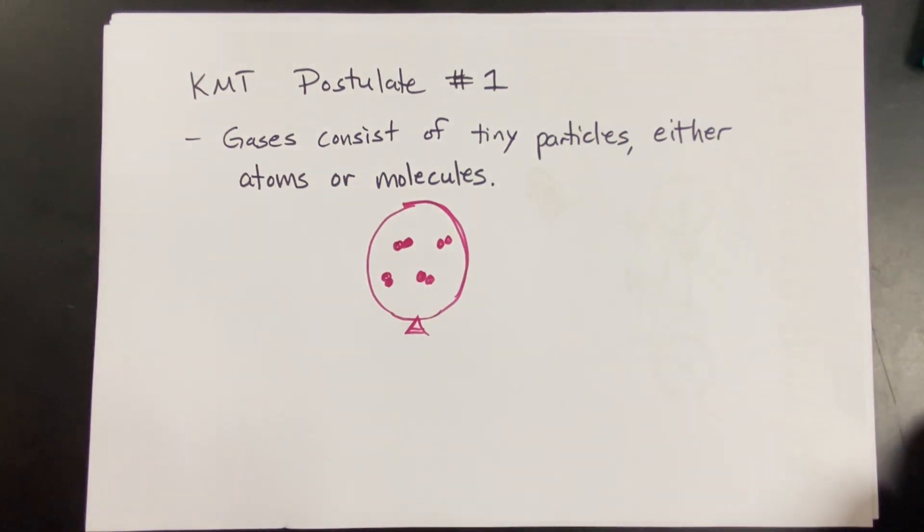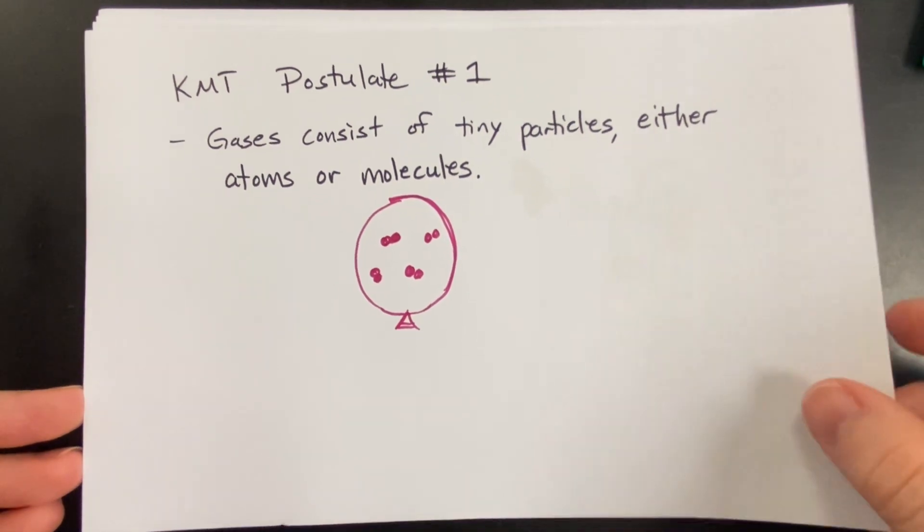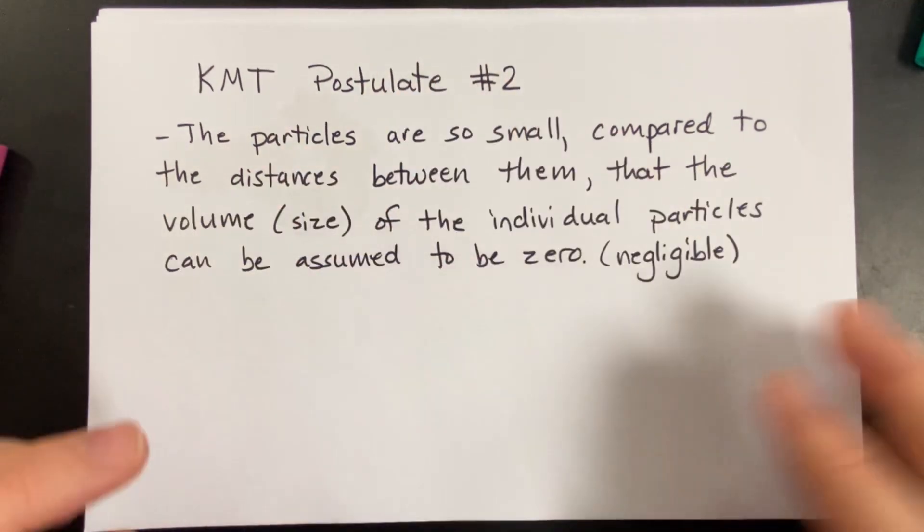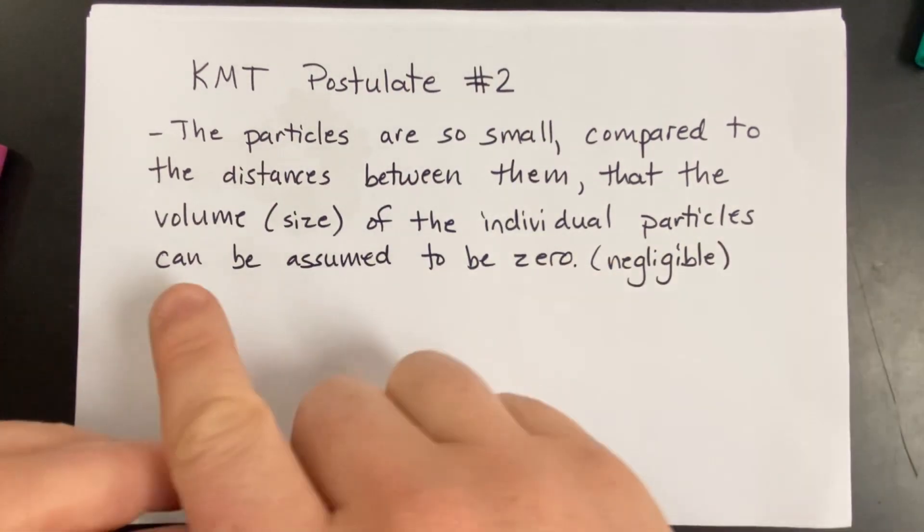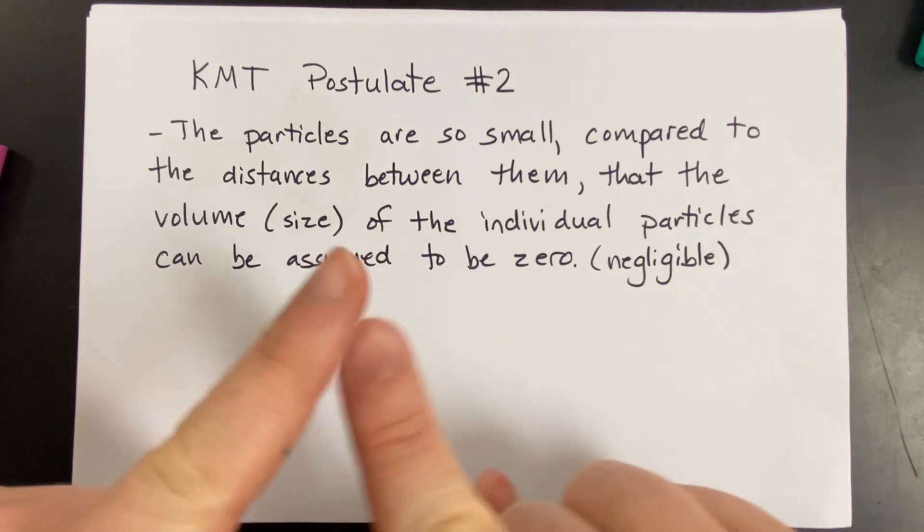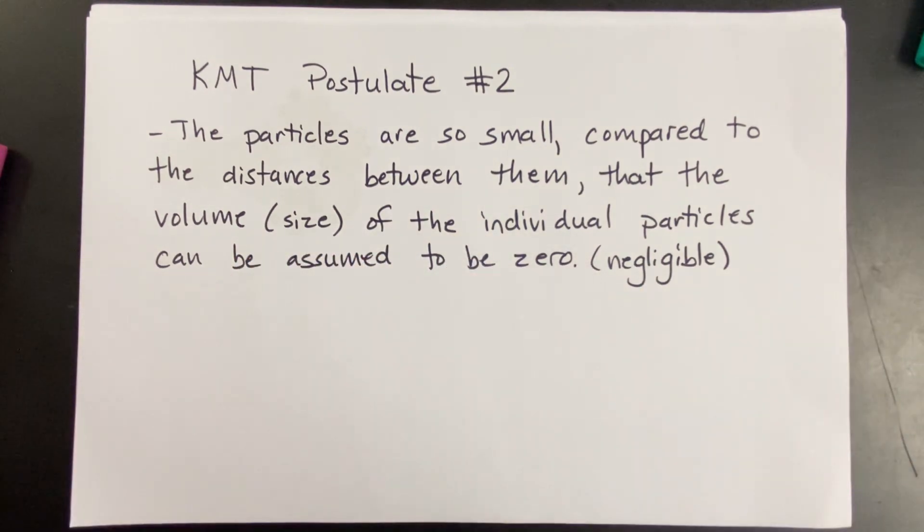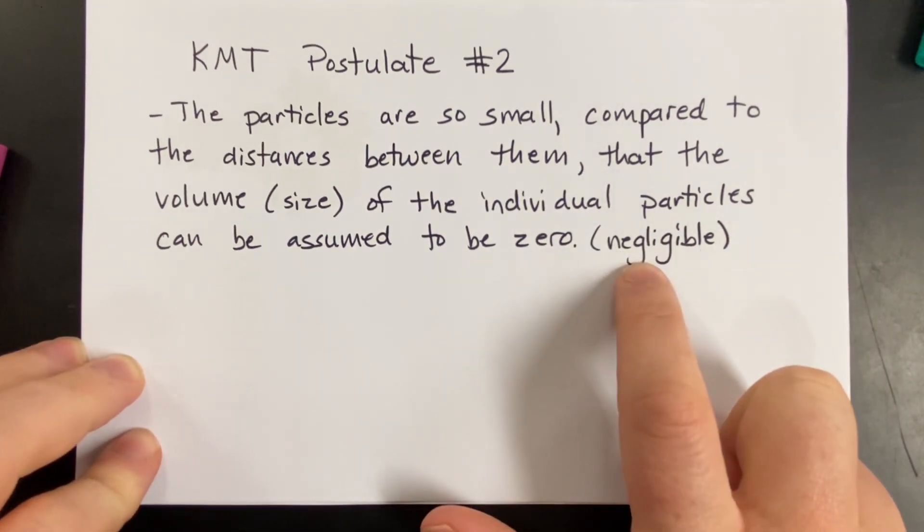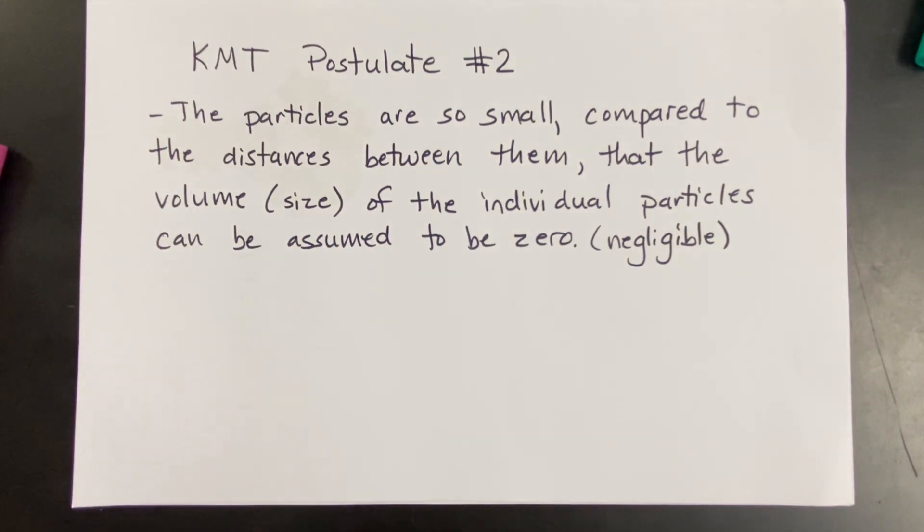I may not necessarily give you time to write down all of this. This is a video, so if you need more time to write this down in your notes, then definitely feel free to pause, okay? All right, postulate number two. Ah, this one's bigger. But the idea, we've actually had this idea before. It says the particles are so small compared to the distance between them that the volume or size of the individual particles can be assumed to be zero or negligible. Negligible means it doesn't matter. What am I talking about?